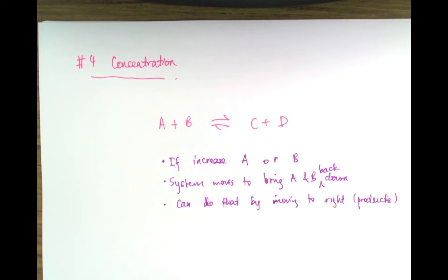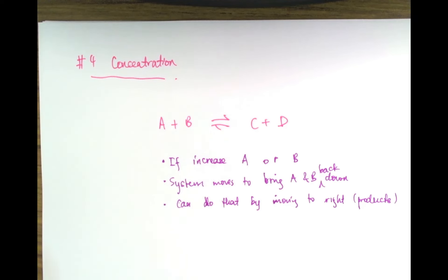That brings us to the end of this introduction on how to apply Le Chatelier's principle to finding out how the equilibrium will shift based on the things that we do to the system — in particular, concentration, catalyst, pressure, or temperature. In the next video, we'll look at how we can apply this to an industrial process known as the Haber process for the production of ammonia, which is a very important process in making fertilizers. We'll see you next time.